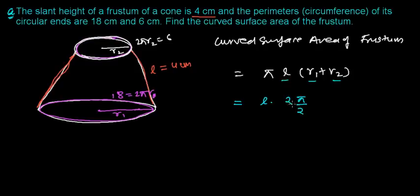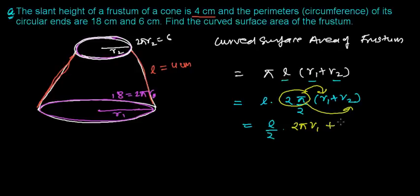And I'm going to divide by 2 and multiply by 2, and then it is r1 plus r2. So for that, it's going to be l over 2, and this 2π will multiply r1, so I'll get 2πr1, and again this 2π will multiply r2, so I'll get 2πr2.